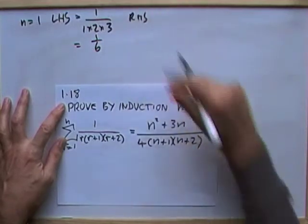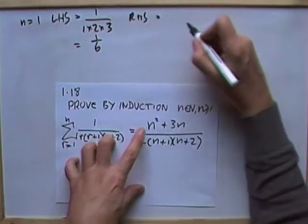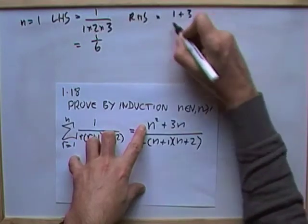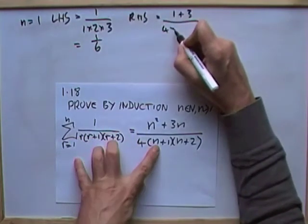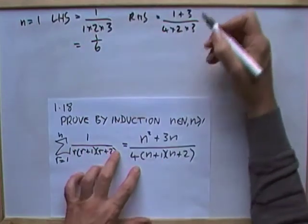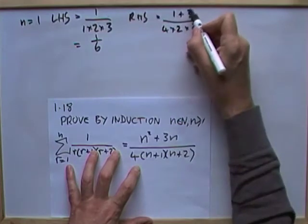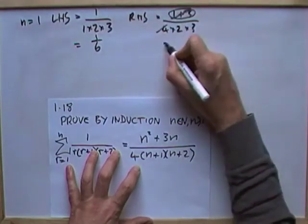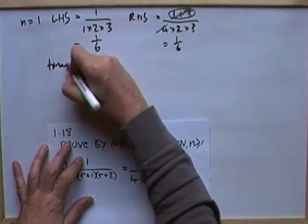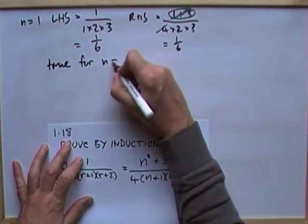The right hand side, on the way of calculation here, when n is 1, that would be 1 squared is 1, and 3 ones are 3, over 4 times 1 more is 2, times 1 more again is 3. I'll just show the working by saying that's 4, that cancels out 4, so that also comes to a sixth, which means that it's true for n equals 1.